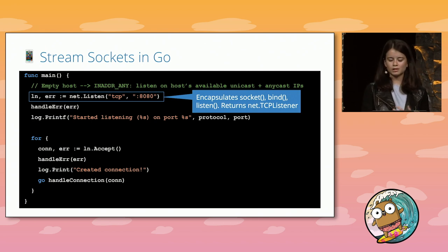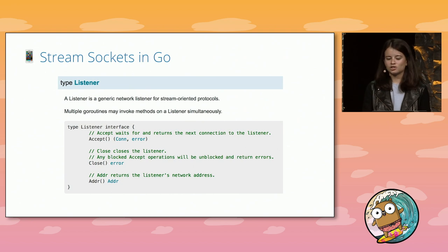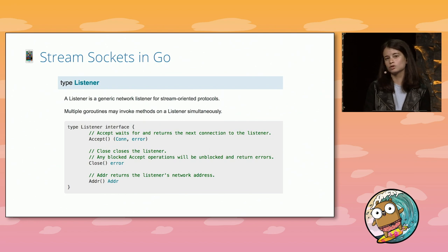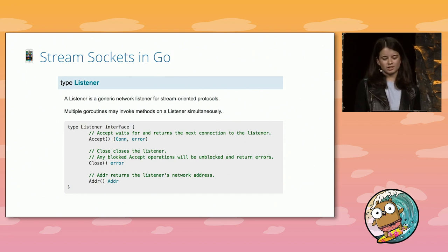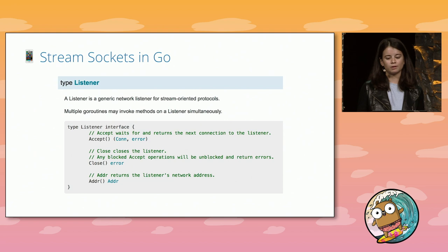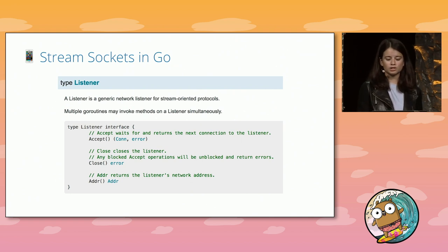The net package's TCPListener struct is quite small and only contains the file descriptor number for our listening server socket. It implements the listener interface, which provides access to the accept and close system calls for managing connections to a server. Go abstracts all the low-level logic away with the TCPListener struct and the simple-to-use methods of the listener interface. Go's support for declaring methods on struct types allows us to generate a TCP server without directly touching socket code once.